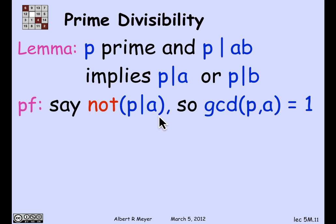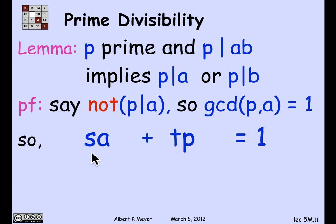Here's how to prove that. Suppose P divides AB but doesn't divide A. Of course, if it does divide A, we're done, so we may assume it doesn't. Since the only positive divisors of P are P and 1, if P doesn't divide A, the GCD of A and P is 1. Now comes the linear combination trick: given that GCD(P, A) = 1, there exists a linear combination SA plus TP equal to 1 for some coefficients S and T.